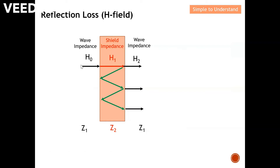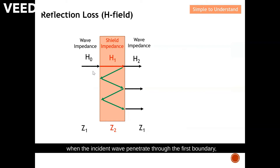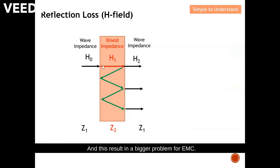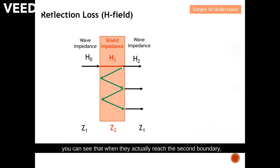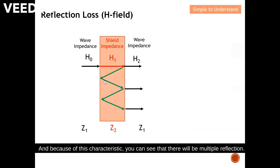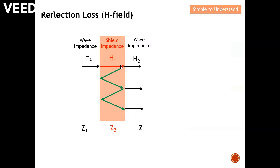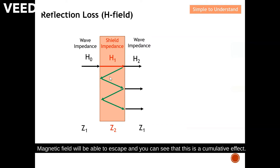Next, let's focus on magnetic field. For magnetic field, when the incident wave penetrates through the first boundary, most of it penetrates through and very little is reflected back — this results in a bigger problem for EMC. When the wave successfully penetrates through the first boundary and reaches the second boundary, the characteristics change and most is reflected back, resulting in multiple reflections. At the other end, some of the magnetic field escapes, and this cumulative leakage becomes a very critical issue.